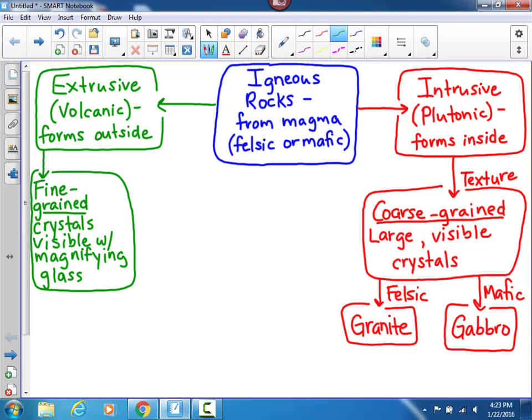You'll see two fine-grained rocks in your lab. Again, we have one that is felsic or generally light-colored. And that one's name is rhyolite.